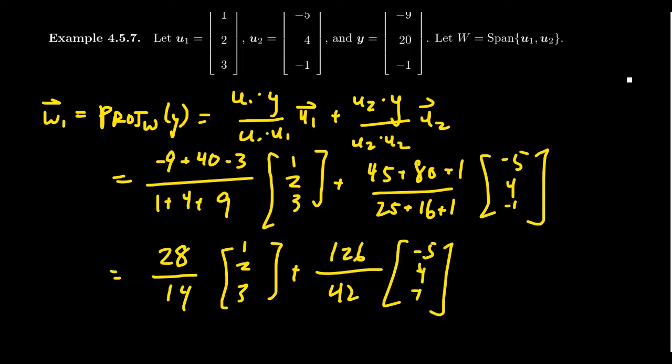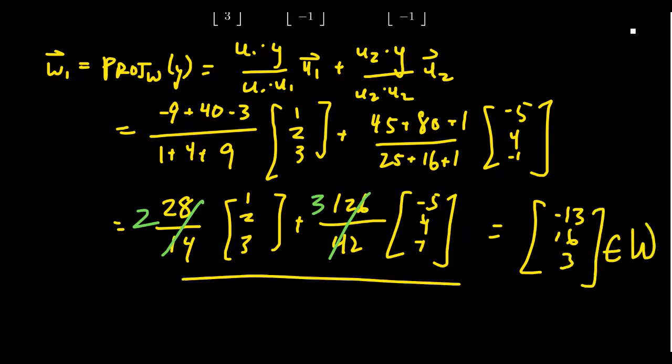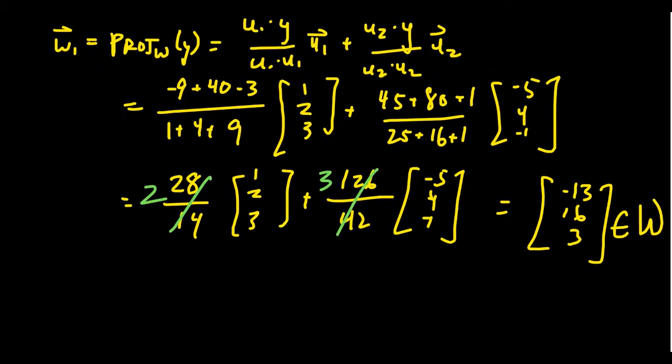Notice that these fractions both reduce down. 14 goes into 28 two times, 42 goes into 126, that goes in there three times. And so if you take 2 times [1, 2, 3] and 3 times [-5, 4, -1], you can see that that's going to turn out to be the vector [-13, 16, 3]. This is a vector that lives inside of W. It was a linear combination of its basis right here. So that gives you, this gives you y hat, aka w1 here.